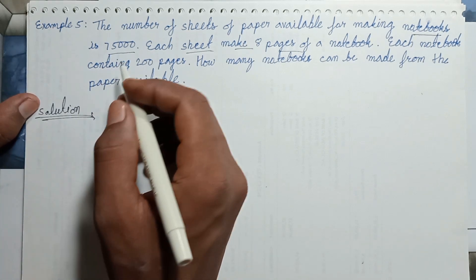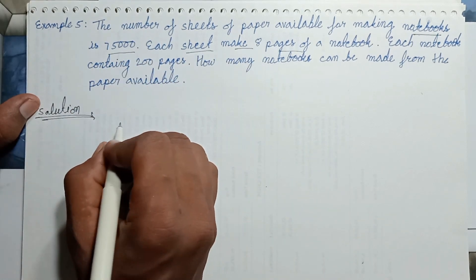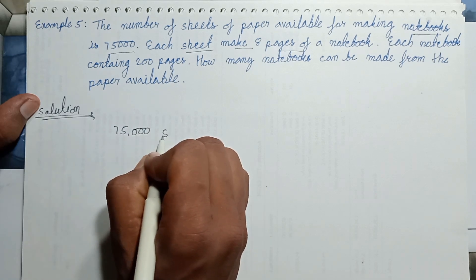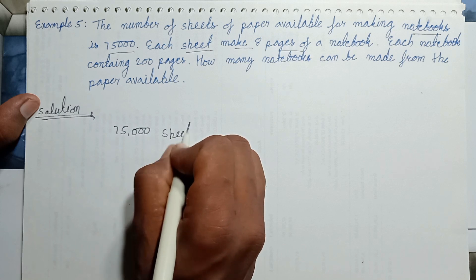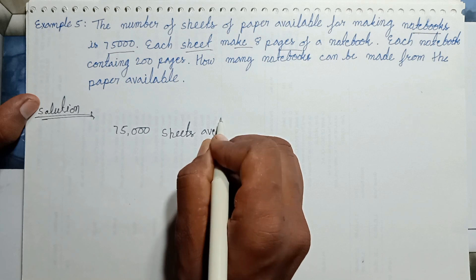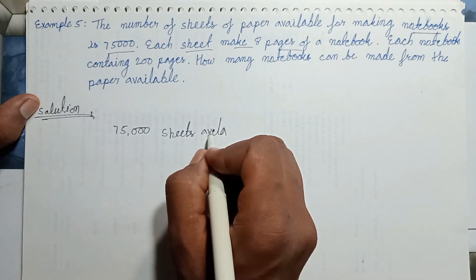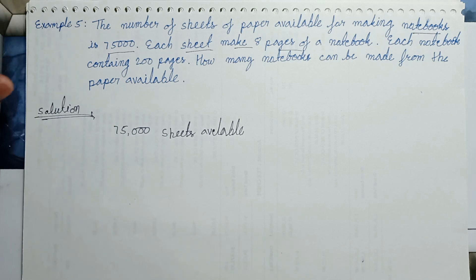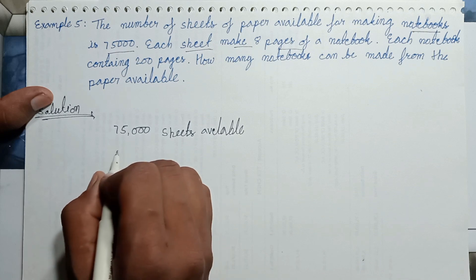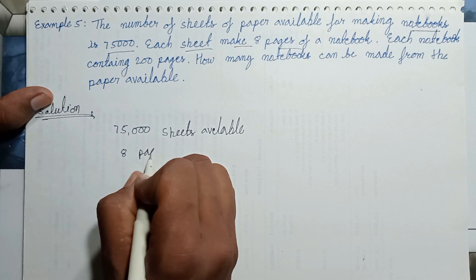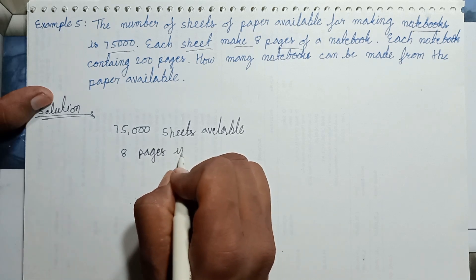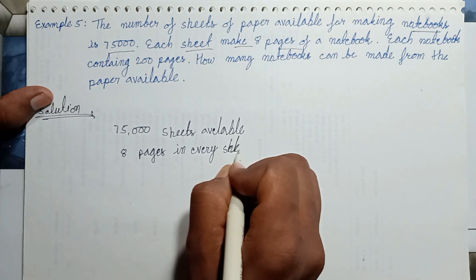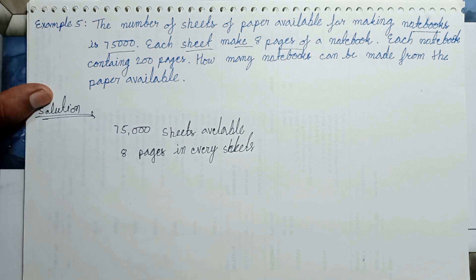How many sheets available? 75,000 sheets available. 8 pages in every sheet. How many pages?